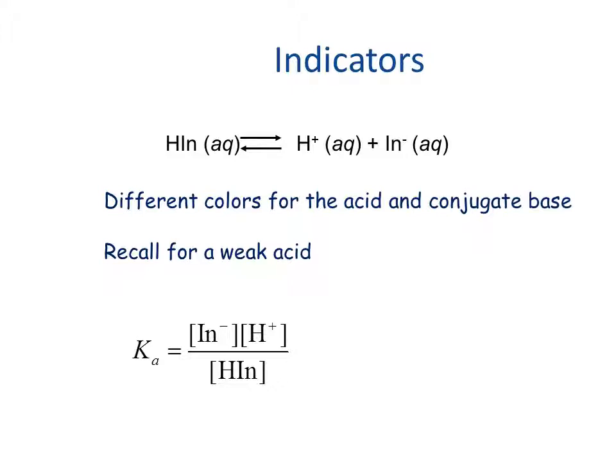We recall for weak acid that Ka, which is a constant, is equal to the conjugate base concentration times the concentration of H+ divided by the concentration of the acid form of the indicator.